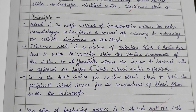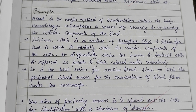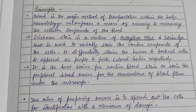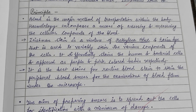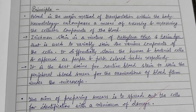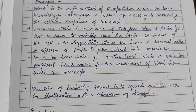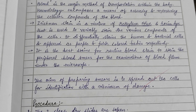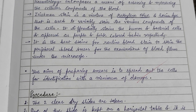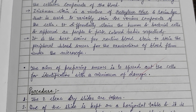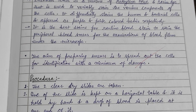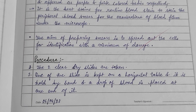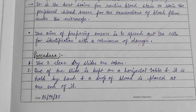The principle is that blood is the major method of transportation within the body, and hematology encompasses a means of assessing and measuring the cellular components of the blood. In this practical we'll use the Leishman stain, which is a combination of methylene blue and eosin dye. The aim of preparing smears is to spread out the cells for identification with a minimum of damage.